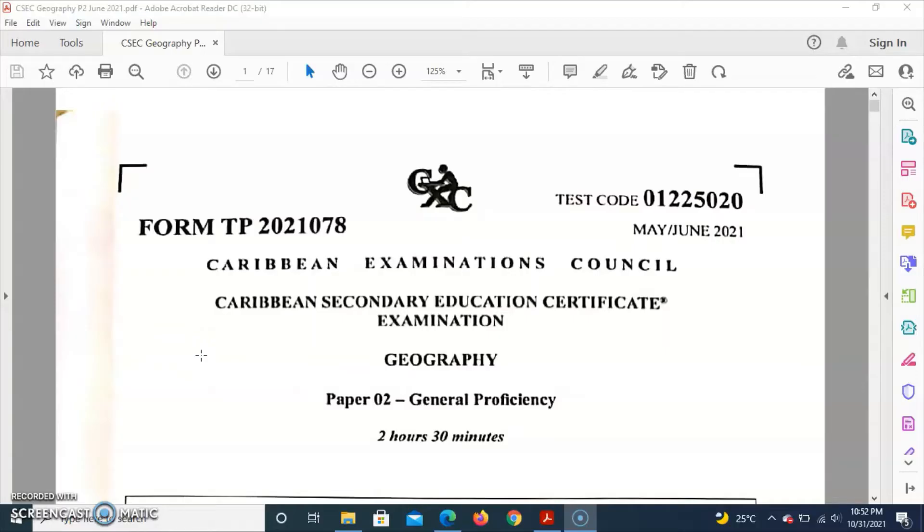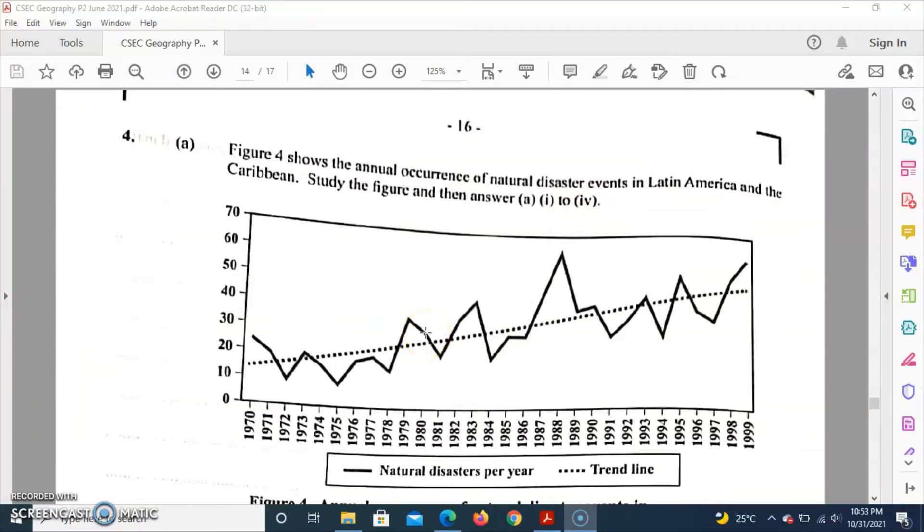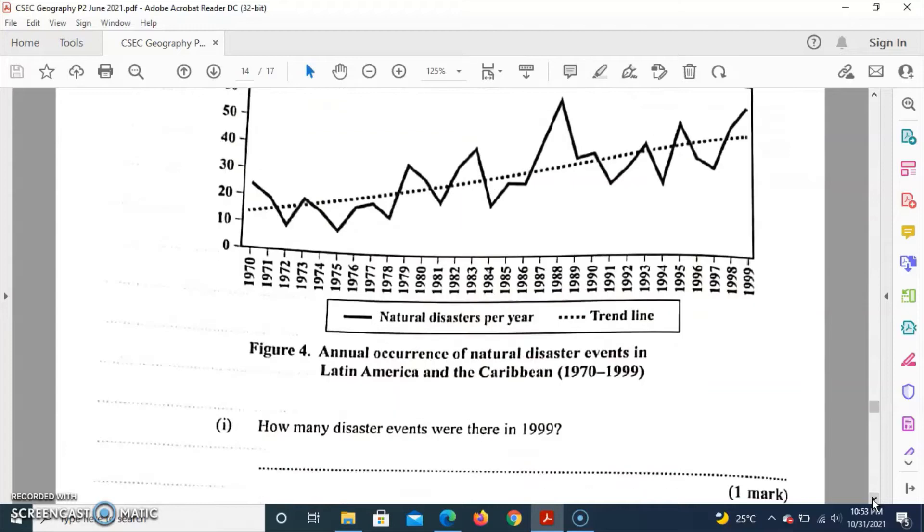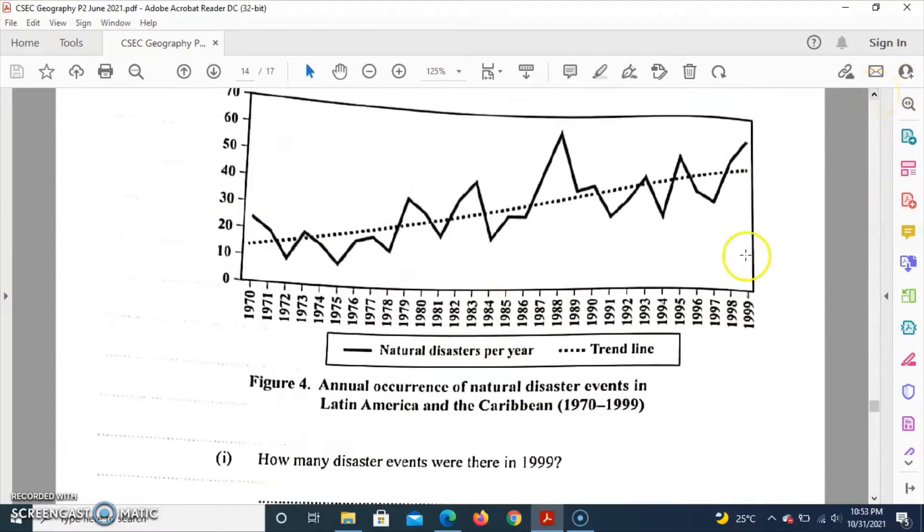Question 4 shows us a diagram that looks at annual occurrence of natural disaster events in Latin America and the Caribbean. We're to study the diagram and answer the questions below. The first question asks how many disaster events were there in 1999.